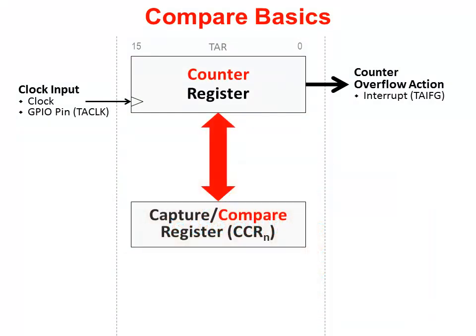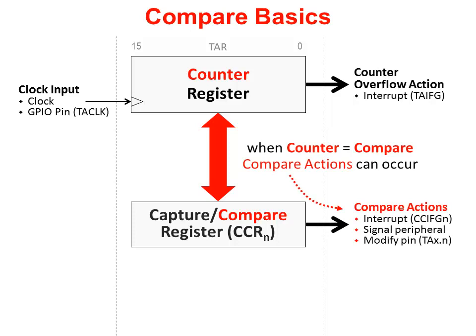Once again, the top portion of the diagram remains the same — the clock input, the counter, and the action, in this case the interrupt. We're going to use the CCR register again, but this time in compare mode. Whenever a match between the counter and the compare value occurs, a compare action is triggered. Compare actions can include: one, generating an interrupt to the CPU; two, signaling another peripheral such as an A-to-D conversion; or three, changing the state of an external pin. In fact, the modify-pin action is quite powerful — using the timer's compare feature, we can create sophisticated PWM waveforms. We look at generating a simple PWM in the optional lab exercise of this chapter.